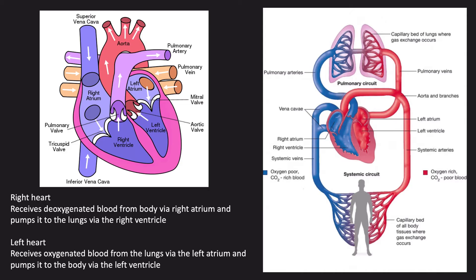We will start with anatomy. The chest is complex, particularly the heart. The heart controls two circuits: pulmonary and systemic. The right heart receives deoxygenated blood from the body via the SVC and IVC into the right atrium and pumps it to the lungs via the right ventricle and pulmonary artery. The left heart receives oxygenated blood from the lungs via the pulmonary veins and left atrium, and the left ventricle pumps it around the body through the aorta.